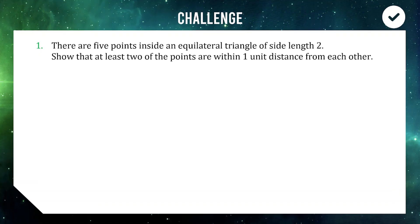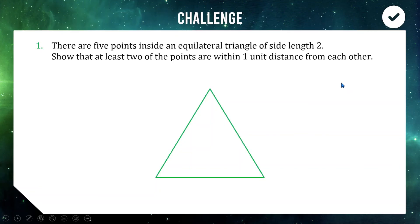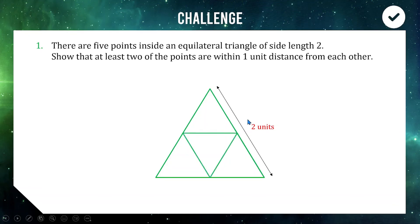Now for some challenge questions — the hardest ones I could find. Question: five points are placed inside an equilateral triangle of side length two. Show that at least two of the points are within one unit of each other. I recommend drawing a picture. Here is an equilateral triangle with all side lengths equal to two units, and we need to show that with five points inside, at least two must be within one unit of each other.